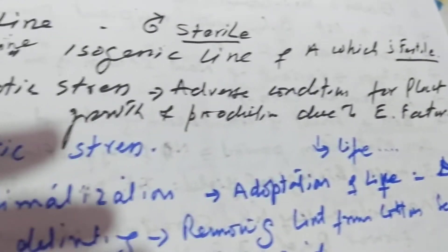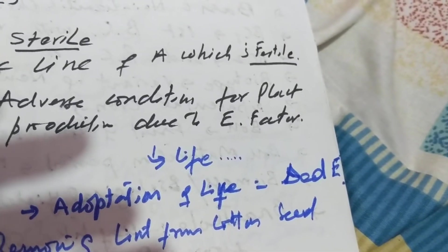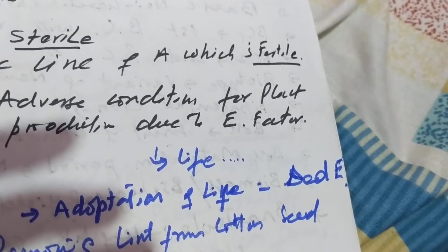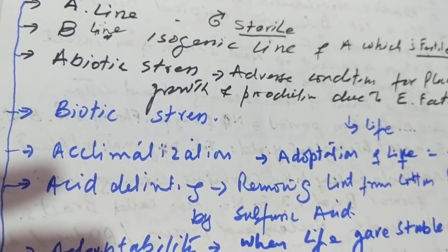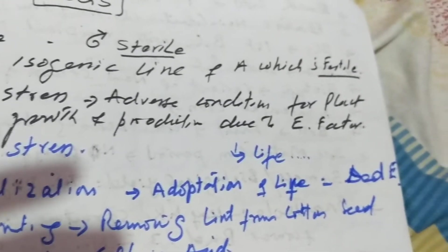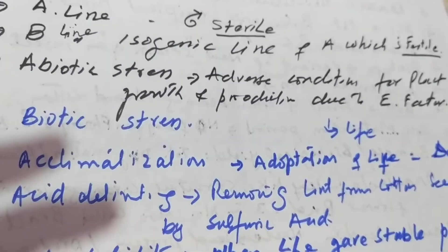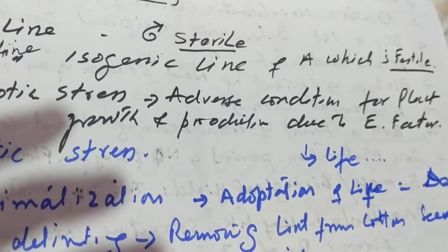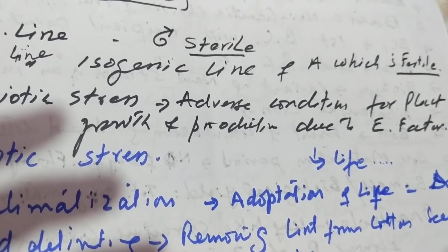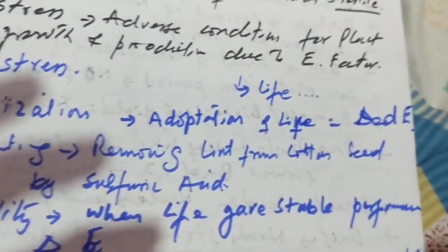Abiotic stress refers to adverse conditions for plant growth and production due to environmental factors such as temperature, moisture, humidity, drought, etc. Similarly, biotic stress refers to adverse conditions for plant growth and production due to biotic factors like virus, disease, insect pests, etc.